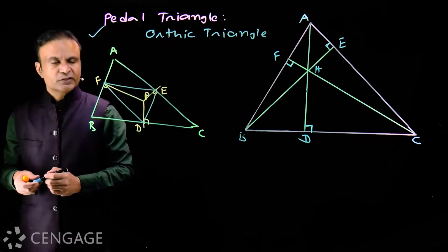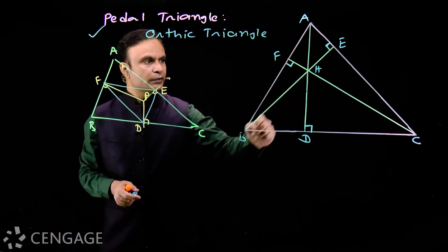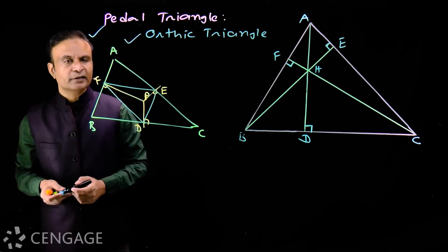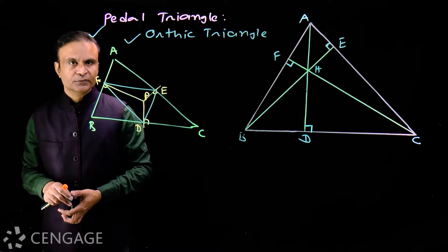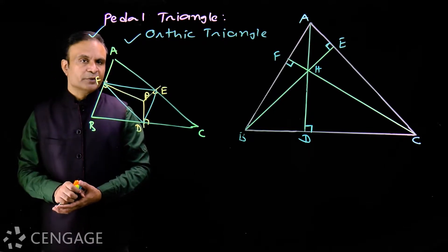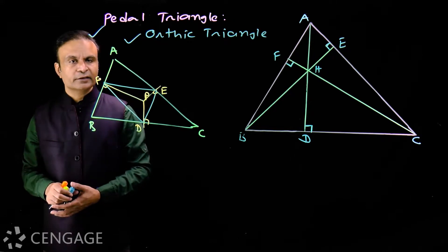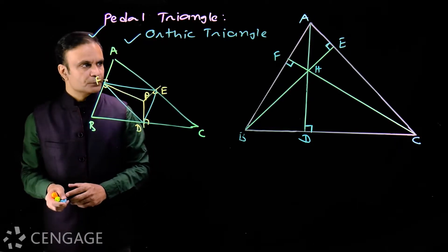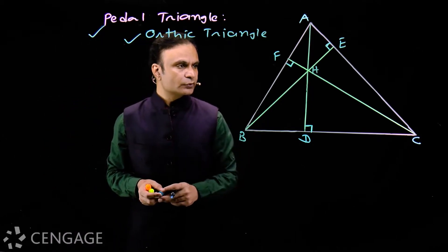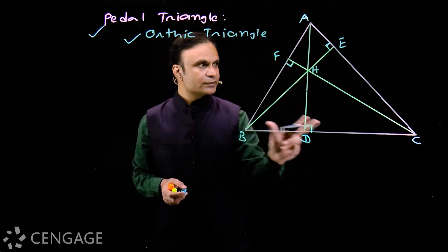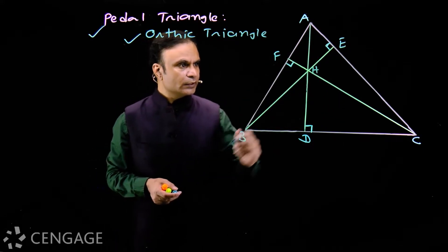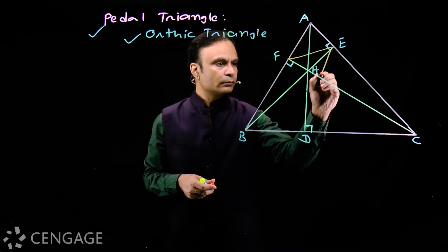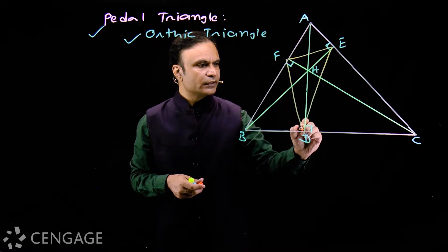In the special case when point P is the orthocenter, this pedal triangle is called the orthic triangle. So the orthic triangle is one special pedal triangle in which point P is the orthocenter. In our syllabus, we have pedal triangle with respect to the orthocenter only. So we call the orthic triangle a pedal triangle. Here, H is the orthocenter, and D, E, F are the feet of perpendiculars from the orthocenter on sides BC, AC, and AB respectively.